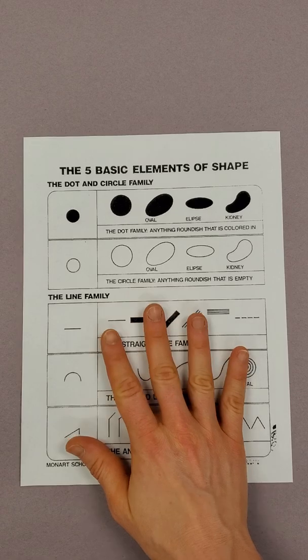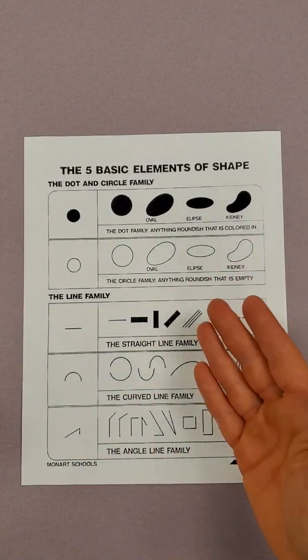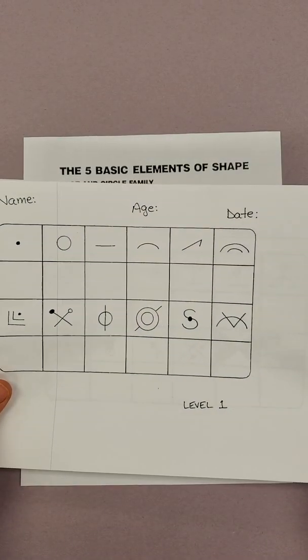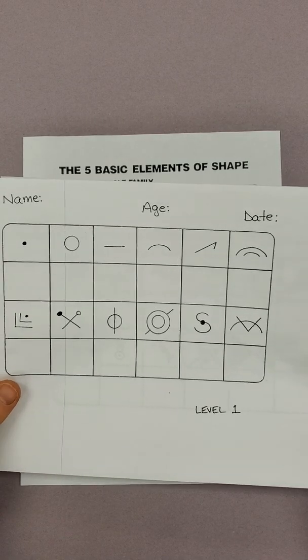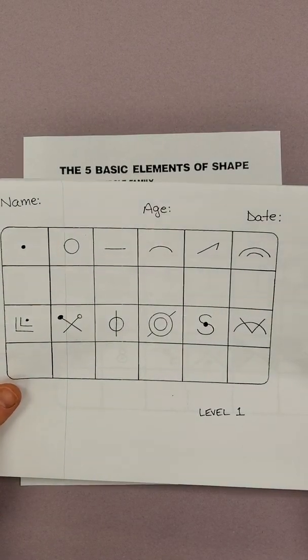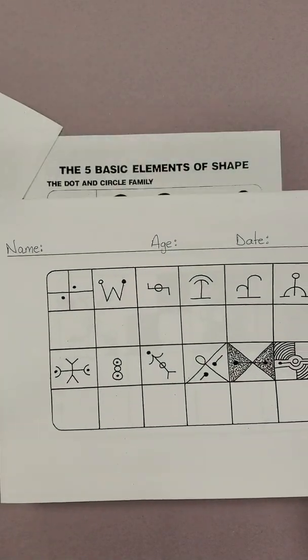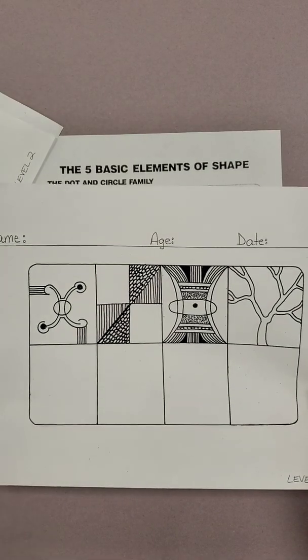So you're going to use your five basic elements of shape, just good practice to refer back to. And what I'm going to have you do is pick one of the echo drawing level exercises to do. So there's a level one, pretty simple, level two, a little more complex, and then level three, whoa, bananas.